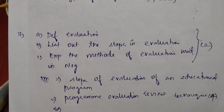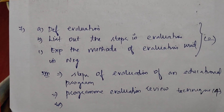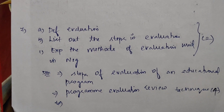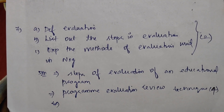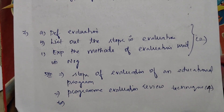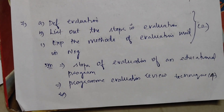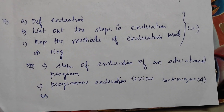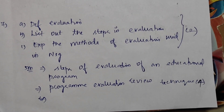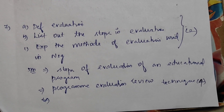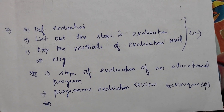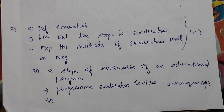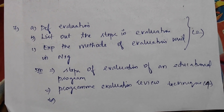Next, define evaluation, list out the steps in evaluation, and explain the methods of evaluation used in nursing — this appears twice overall across options A, B, and C. Next, find the steps of evaluation of an educational program. Program Evaluation Review Techniques — this is one important 5-mark question that appears four times.